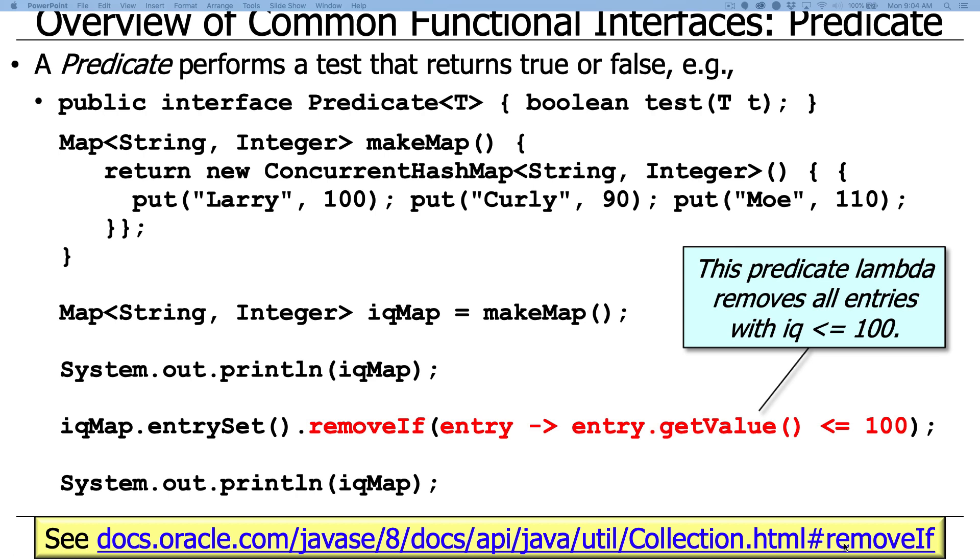Okay, so first of all, take a look at that syntax there. What it's saying here is remove any entry in this entry set if the value of the entry is less than or equal to 100. And you'll notice, this is what's called a lambda expression. There is no actual reference to a method called test, and that's because this is a lambda expression, and it's got a function descriptor that matches the signature for this particular functional interface.